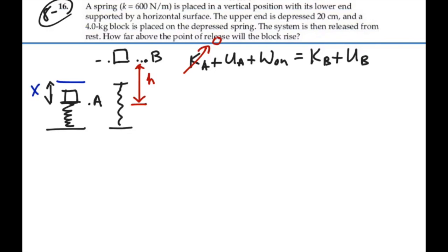If we look at point B, the block goes as high as it can go and go no further. It'll momentarily stop, and at that moment it'll have no velocity at B. So we have no kinetic energy at B either.